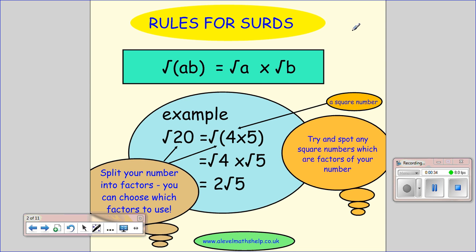The rules for surds. The first one we look at is multiplication. If we have a number and the number can be factorised into two different numbers, we can split our root into the root of one of the numbers times the root of another number. Now the key thing to doing these is to try and spot a nice square number because what you're trying to do is simplify it.